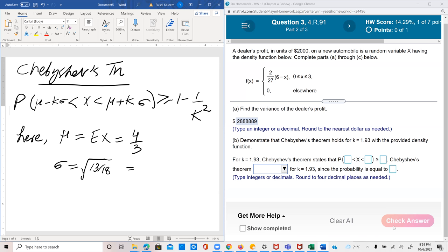So that's 0.8498. 4 thirds is 0.3333 because we are dealing with four decimal places. And therefore, the μ minus k sigma will be 1.3333 minus, and the k is 1.93 in this problem, times 0.8498. So I get negative 0.3069.